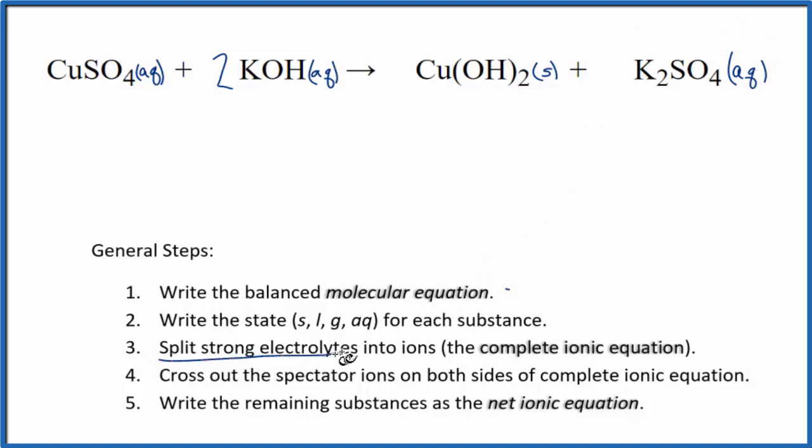Now we can split the strong electrolytes into their ions. It's called the complete ionic equation, sometimes the total ionic equation. So to do that, we need to know the charges. Sulfate ion, that's always 2 minus, so the copper has to be 2 plus, and that's why we're calling it copper 2.